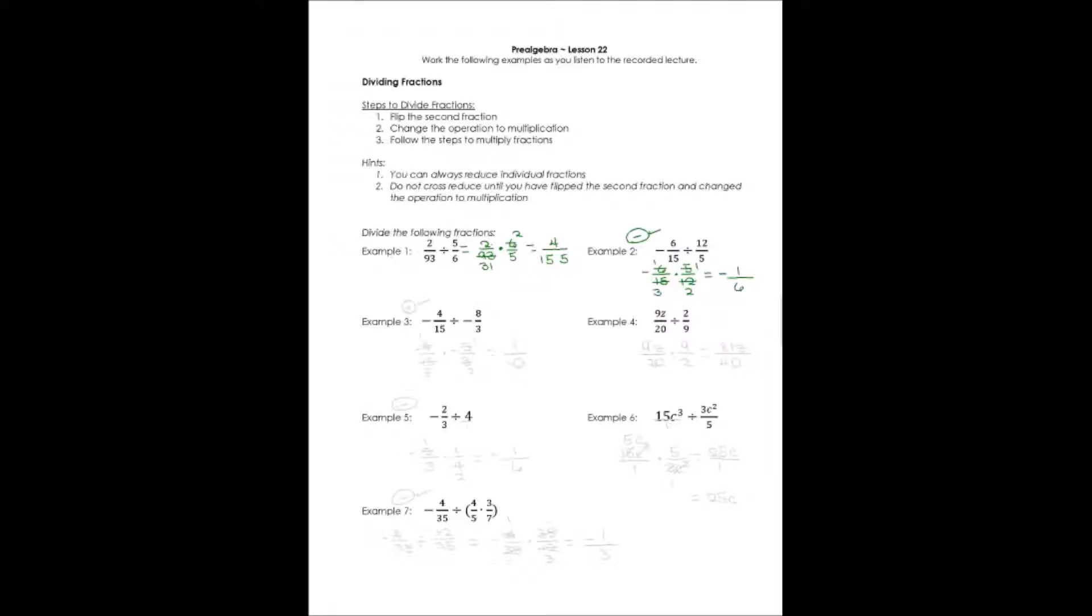Example 3 looks like a negative divided by negative. That's going to be a positive answer, so I'm going to put it down and circle it so that I don't mess that up. I'm going to change these by saying -4/15 times -3/8. I flipped the second fraction and changed it to multiplication, and then I can reduce. I can cross-reduce because nothing individually reduces. 3 and 15 will both divide into those numbers. 3 will divide into both 3 and 15, and 4 is going to divide into both 4 and 8.